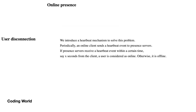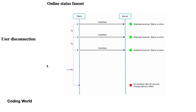For user disconnection, to understand whether a user is online or offline we introduce a heartbeat mechanism. Periodically, an online client sends a request to the server and the server checks whether the respective recipient is online or offline. In this mechanism, the client sends a heartbeat and waits for five seconds. If the heartbeat is received, the status is online and the process repeats. If the heartbeat is not received within five seconds, that means the user or server is offline.